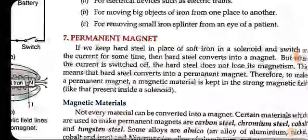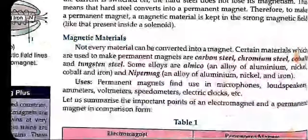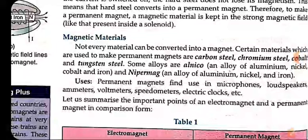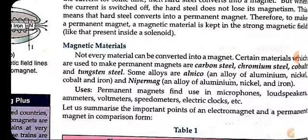Even if we switch off, hard steel remains as magnet. Its internal properties change. This means that hard steel converts into permanent magnet. Therefore to make permanent magnet, magnetic material is kept in the strong magnetic field. Not every material can be converted into magnet. Certain materials like carbon steel can be converted into permanent magnets.